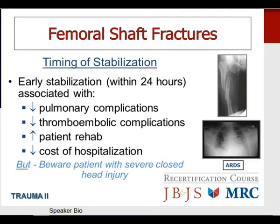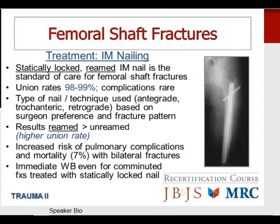Intramedullary nailing is the treatment of choice for femoral shaft fractures — a statically locked reamed nail is the standard of care. Union rates are very high and complications are rare. The type of nail and technique — antegrade, trochanteric entry, or retrograde — is based on surgeon preference and fracture pattern. Results of reamed nailing are superior to unreamed, with a higher union rate. Beware bilateral femoral shaft fractures: there is significantly increased risk of pulmonary complications and a reported 7% mortality. Once a femoral nail is statically locked, immediate weight-bearing is appropriate even for comminuted fractures.